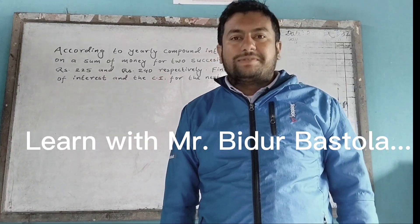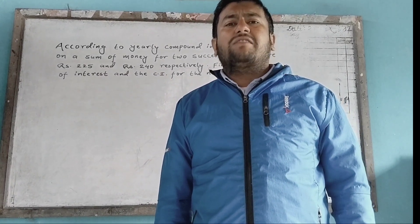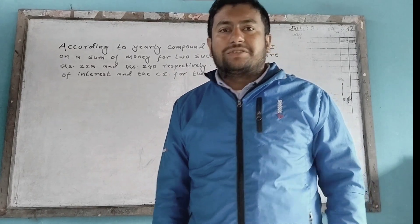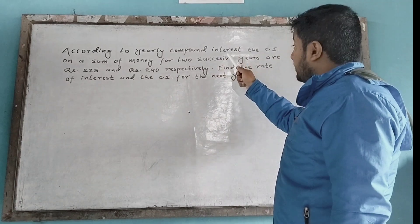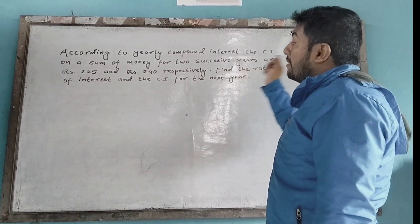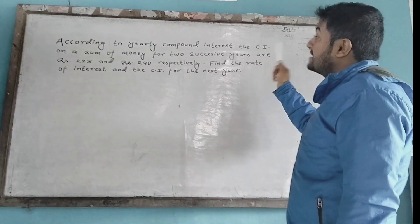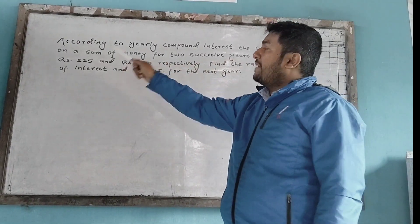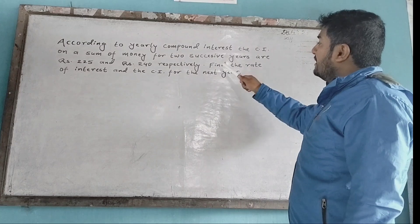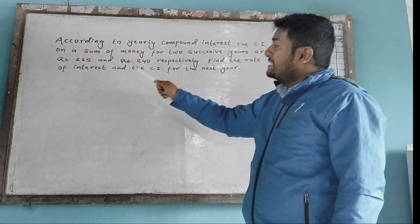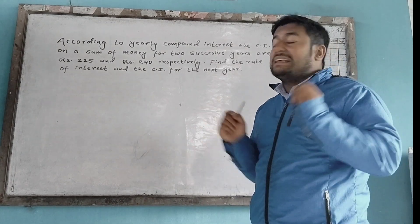Welcome to my YouTube channel. Today, I will tell you a question about compound interest. The question is: according to yearly compound interest, the compound interest on a sum of money for two successive years are Rs. 225 and Rs. 240 respectively. Then find the rate of interest and the compound interest for the next year.